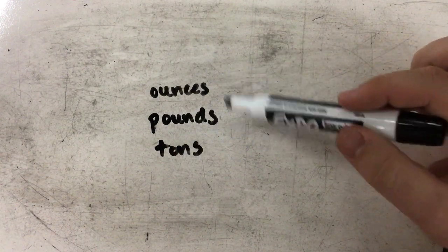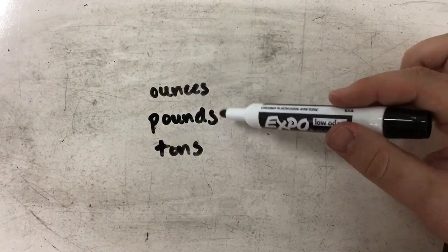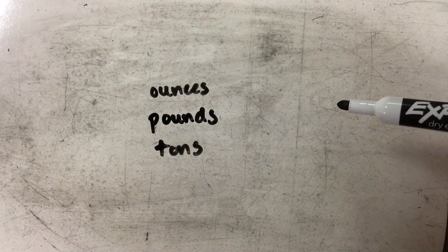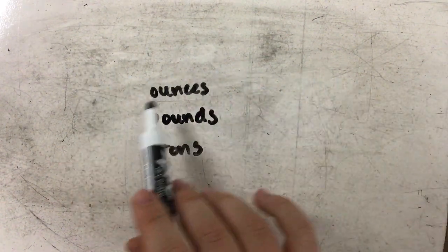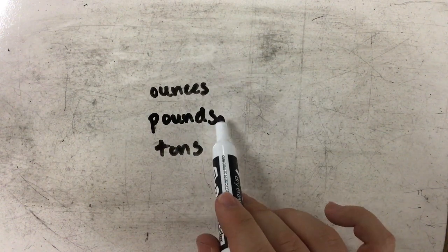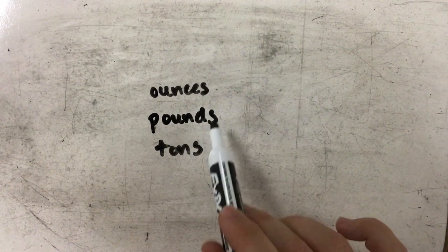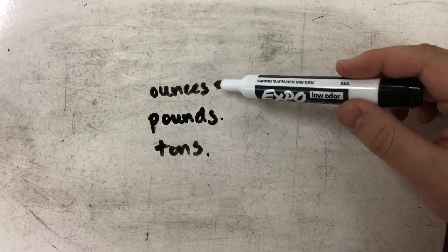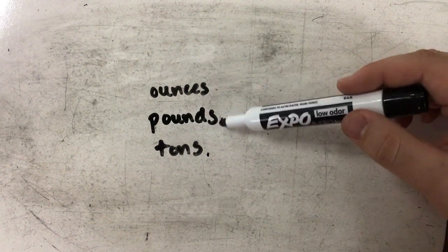And again, in order to convert from unit to unit, we're going to create kind of a map to help us with our conversions. So we're going to build our map by listing the abbreviations, starting with the smallest units and going down to the largest units.